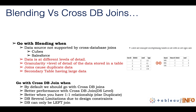Go with cross DB joins by default — you should generally prefer cross DB joins unless you hit the specific cases we discussed. Cross DB joins offer better performance and are better when you have a one-to-one relationship. Data blending has several limitations due to design constraints — we'll make another video covering those limitations and workarounds. Also, data blending can only be a left join, so you need to ensure all required data is on the left (primary) side table for blending to be viable.